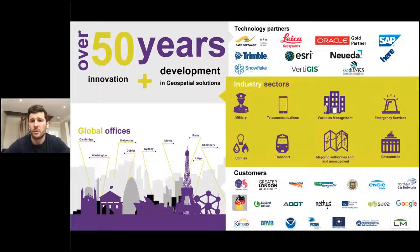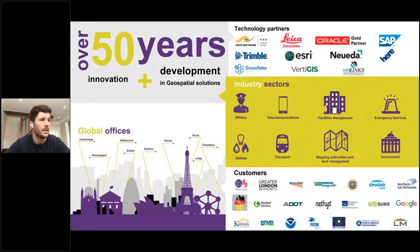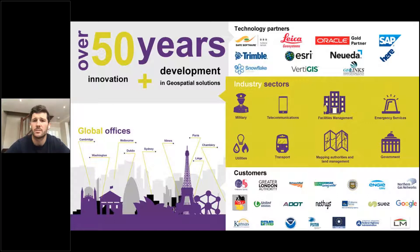At One Spatial, we're a software solutions provider and are considered to be a global expert in managing location and geospatial data. We have offices around the world including here in the UK, the United States, Australia, France, and Ireland. Across these territories we work primarily in three key sectors: government, utilities, and transport. Within these sectors we offer software solutions, product licensing, training, and consultancy services.